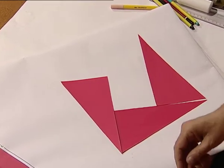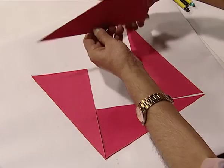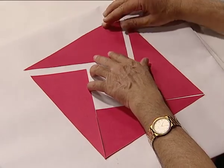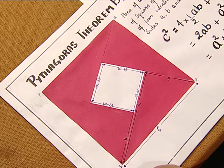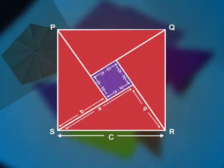We can see that we have made a square. Let us name this square PQRS. Inside this square, there is another square with side length (a - b) units.